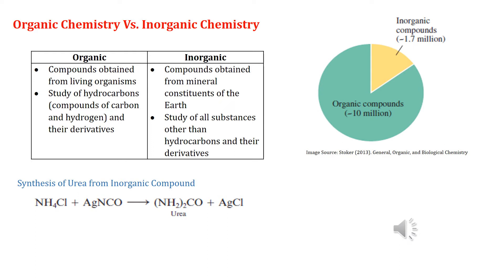Although the terms organic and inorganic were still used to classify compounds, the definitions of these terms no longer reflect their historical origins. Consequently, organic chemistry is now defined as the study of hydrocarbons — compounds of carbon and hydrogen — and their derivatives. Nearly all compounds found in living organisms are still classified as organic compounds. Inorganic chemistry, on the other hand, is the study of all substances other than hydrocarbons and their derivatives.